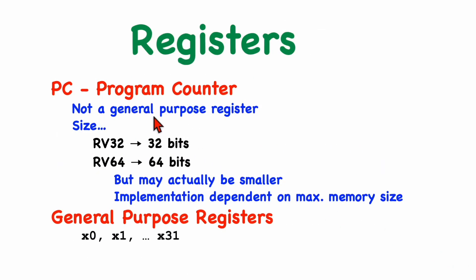The program counter is not a general purpose register. Instead, it holds the address of the next instruction to execute. So, as instructions are executed, one after the other, the program counter is incremented. And the core uses the program counter as the address to send to the memory unit to fetch instructions. The size of the program counter is the same as the size of the general purpose registers. So, for RV32 cores, it would be 32 bits or 4 bytes. And for RV64 RISC-V cores, it would be 64 bits or 8 bytes.